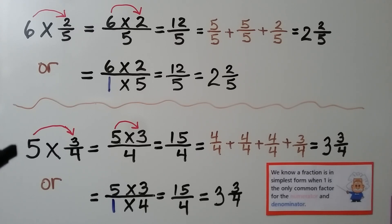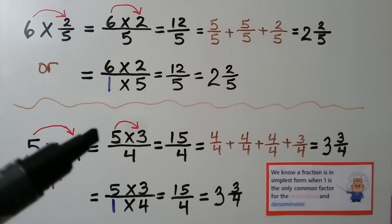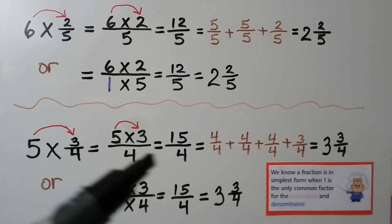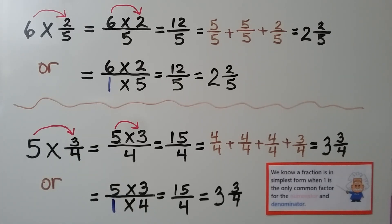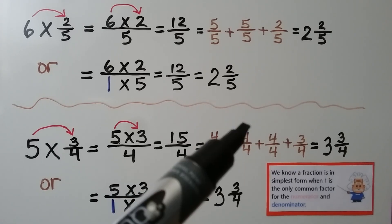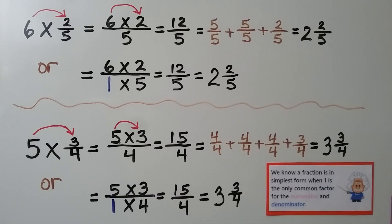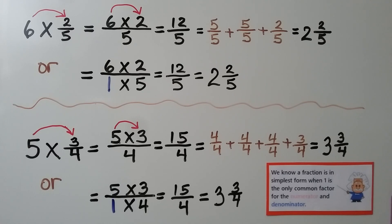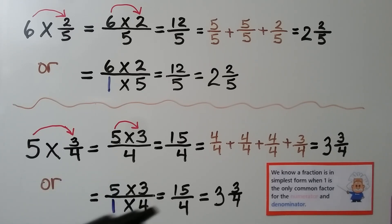Here we have 5 times 3 fourths. We can write it as 5 times 3, which is 15, over that 4 denominator — that's 15 fourths. And 15 fourths is equal to 4 fourths plus 4 fourths plus 4 fourths plus 3 fourths, so we have 1, 2, 3, and 3 fourths. We can also write it as 5 times 3 over 1 times 4, which is equal to 15 fourths, also equal to 3 and 3 fourths.